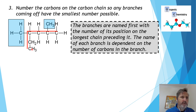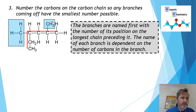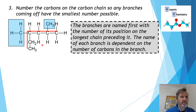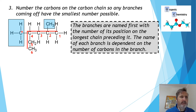There are two ways to number the main chain: from the bottom — one, two, three, four, five, six — giving one branch the number three and the other number five; or from the right, giving them numbers two and four. In organic chemistry, we give the smallest possible numbers, so we number the main chain from the right, giving the branches numbers two and four.